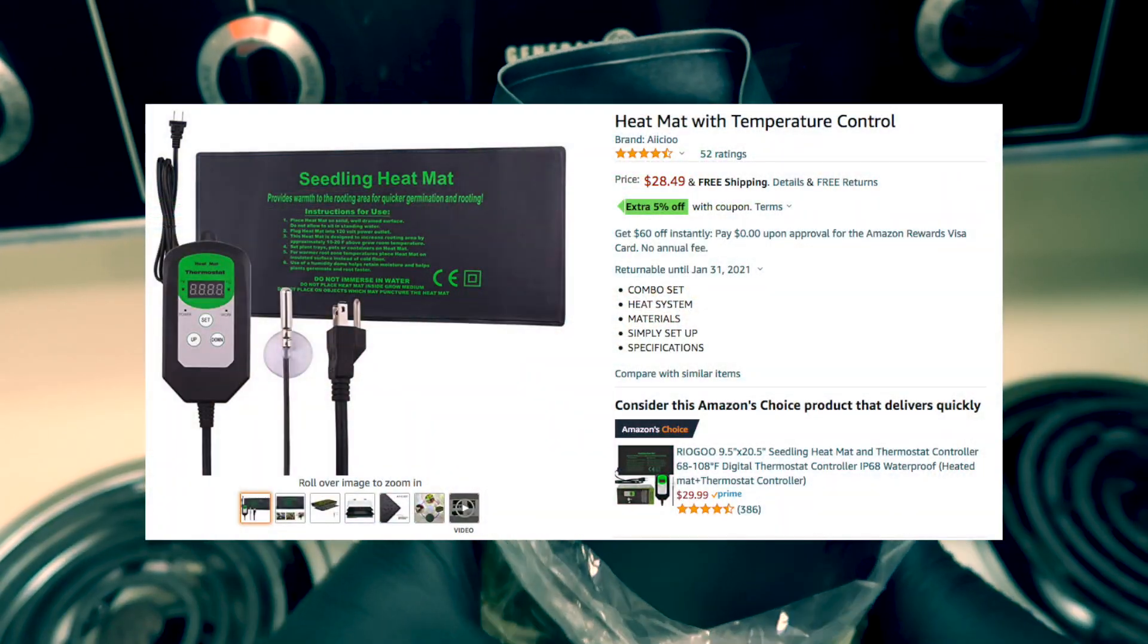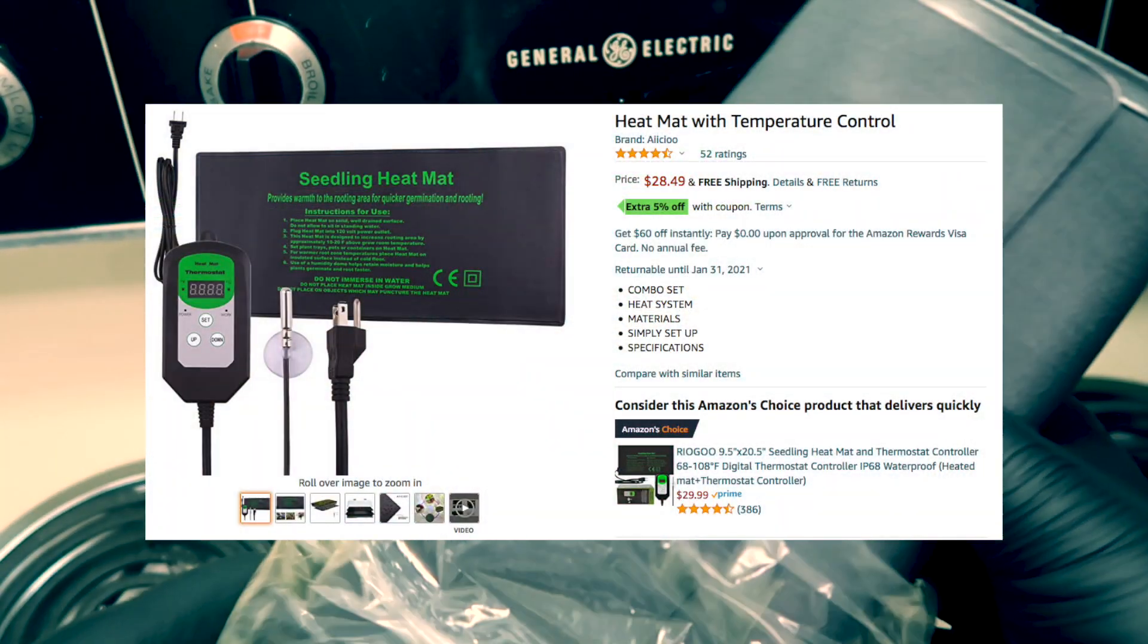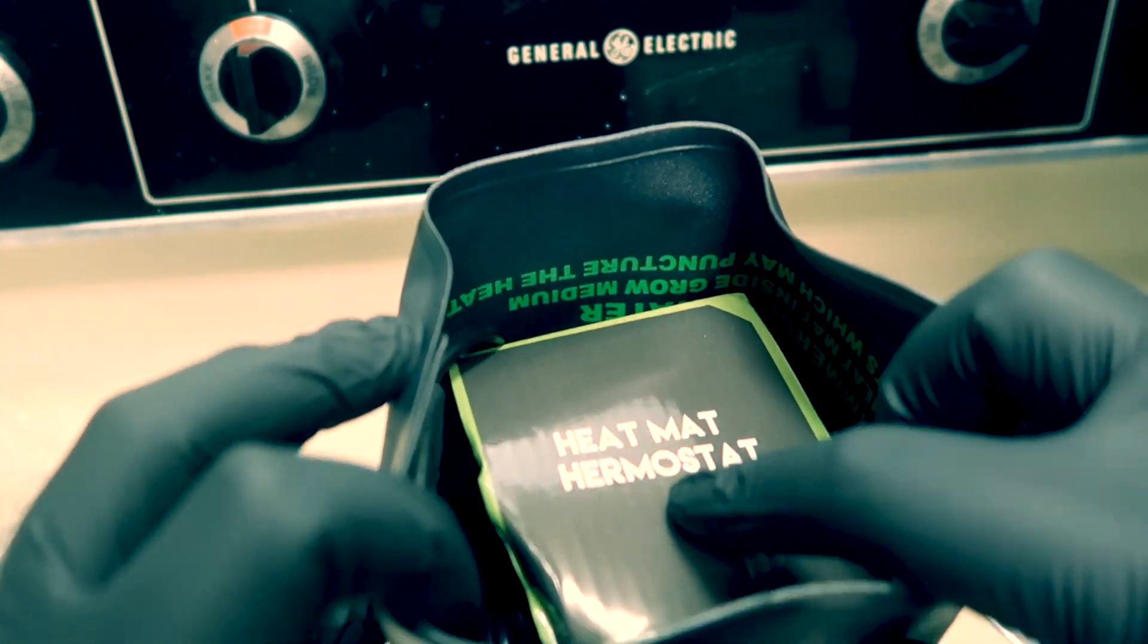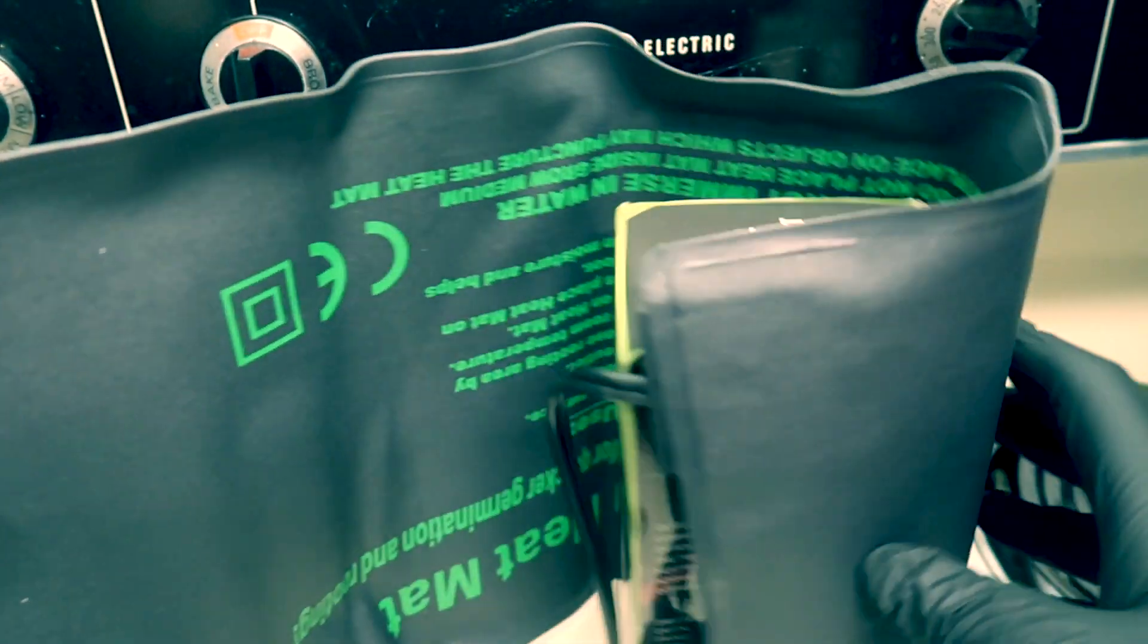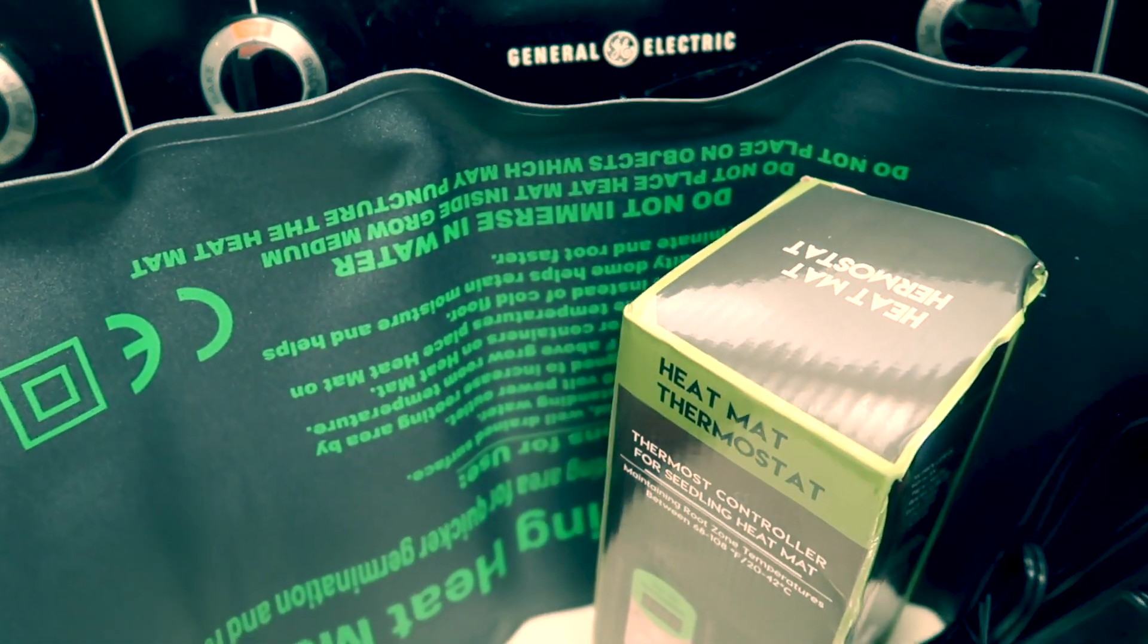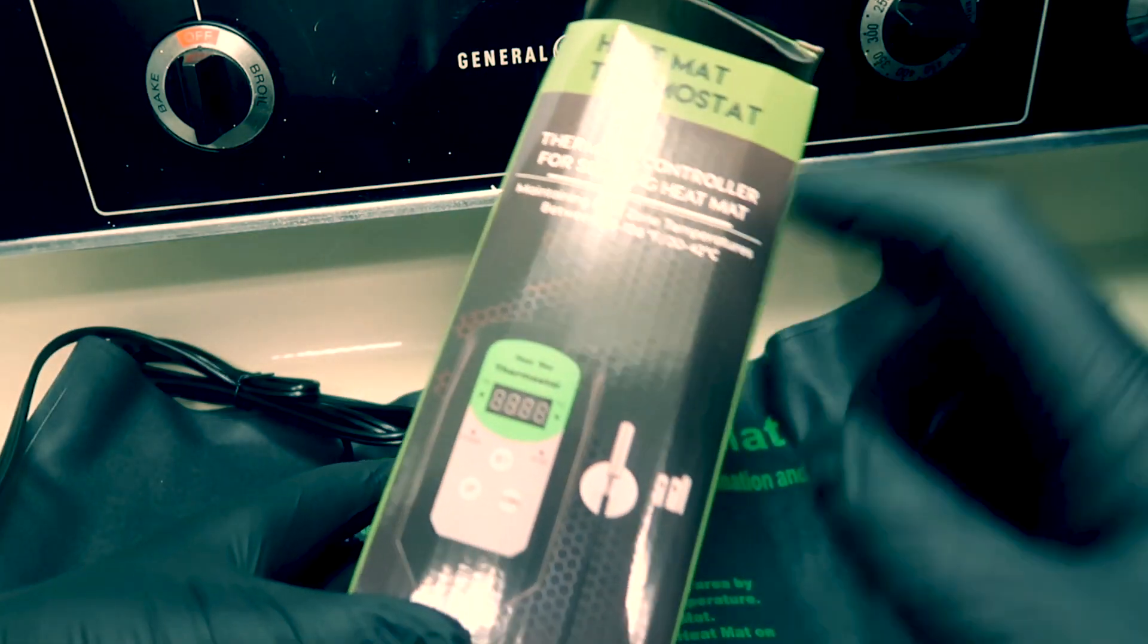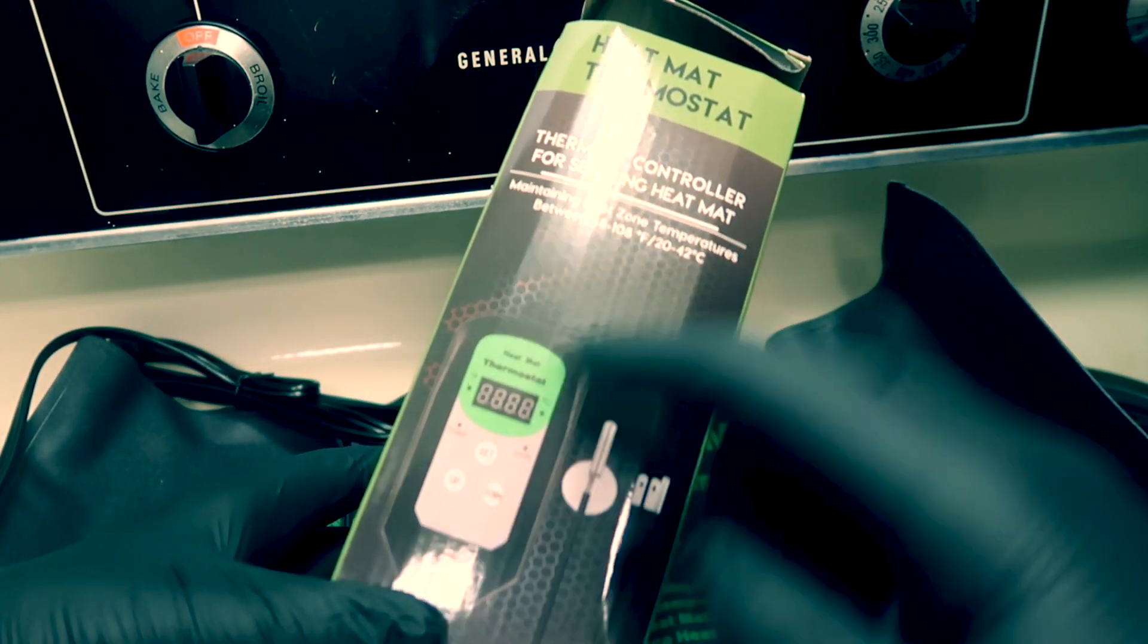This seed germination mat was less than $30 on Amazon and it comes with that thermostat, or should I say hermostat, in order to control its temperature and shut it off once it reaches the correct temperature. So there you can see the heat mat and then the thermostat is right here, comes with a little temperature probe that's connected to it.